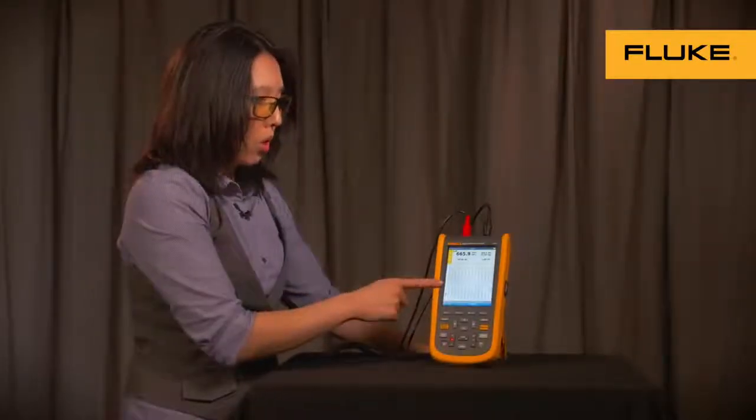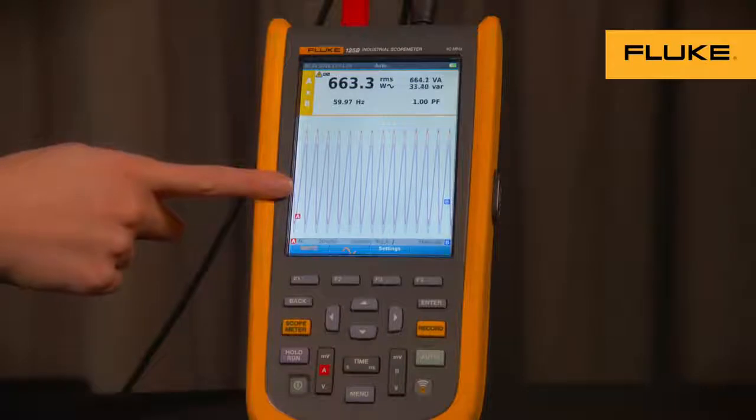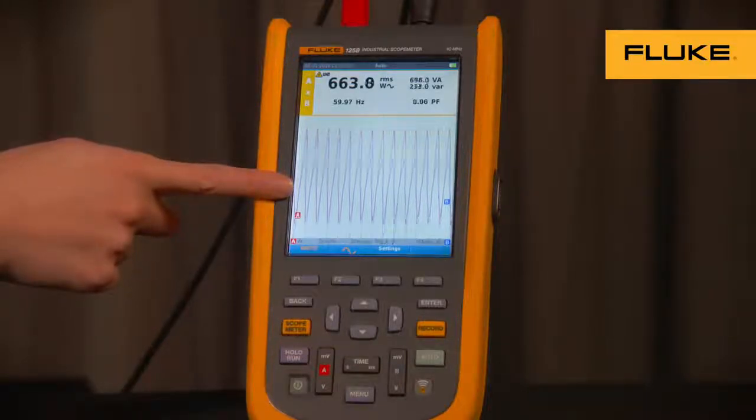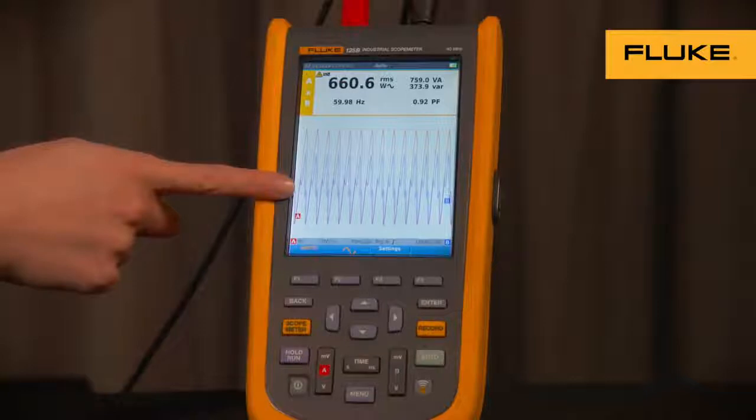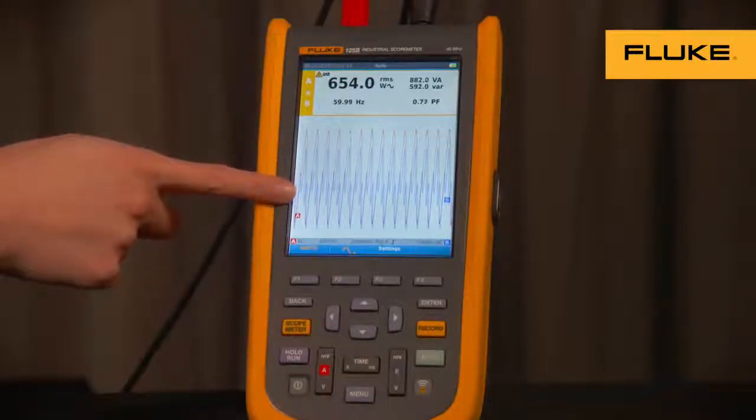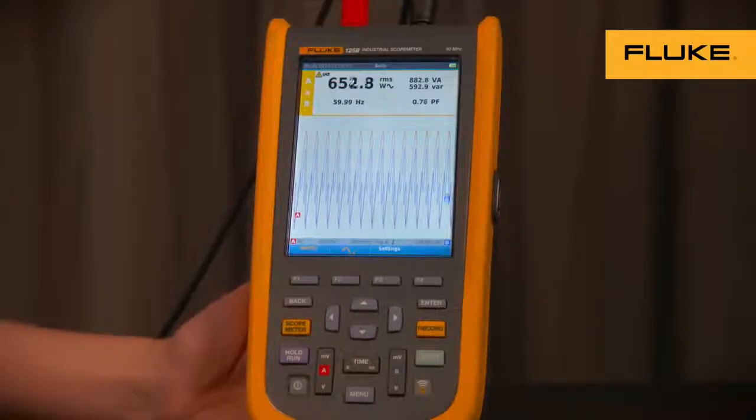If we add a third harmonic distortion on the current, notice the blue sine wave, which is our current measurement, experiences distortion. And at the same time, you can see your power factor and all your other power parameters change.